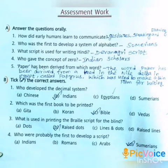Option B: Tick the correct answer. First question: Who developed the decimal system? Options: A. Chinese, B. Indians, C. Egyptians, D. Sumerians. Answer: Option B, Indians.